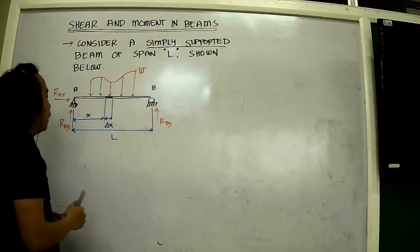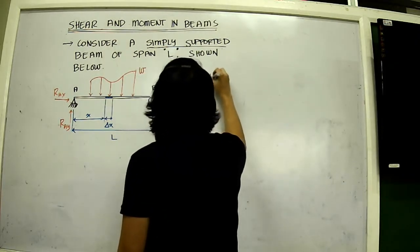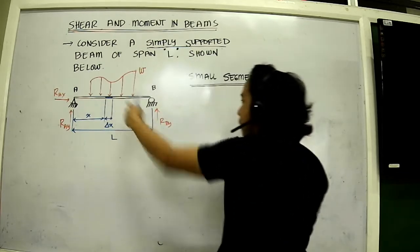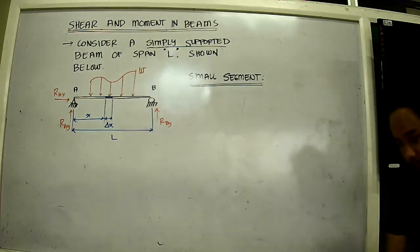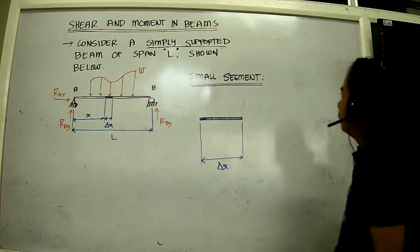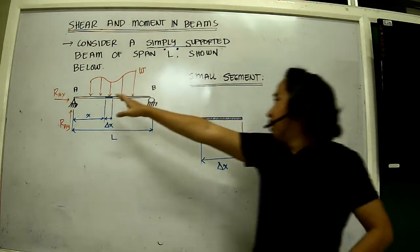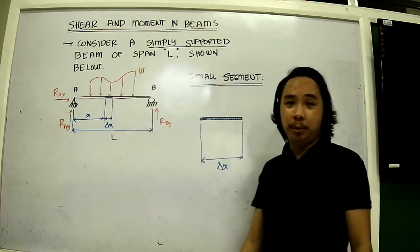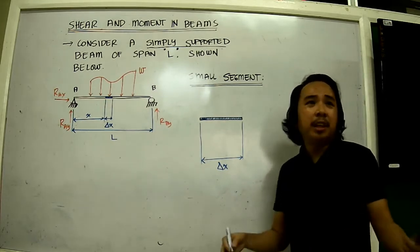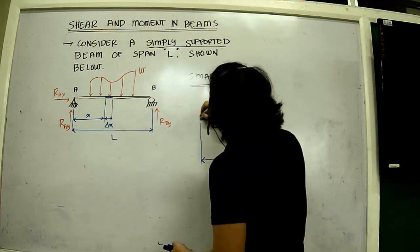Now I'll just call this piece here delta X. Delta X. Now I would like to pick this segment here and isolate this. Take it and draw the free body diagrams. Just take this small segment here. Small segment of this beam. Pick this very small segment and enlarge, blow it up rather. So this very small segment here, we need to judge the magnitude of W.